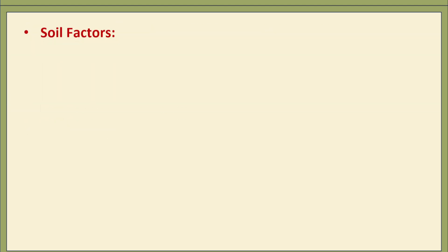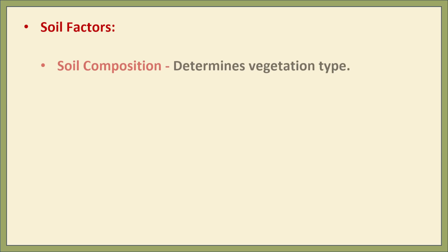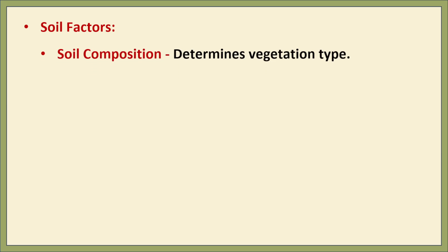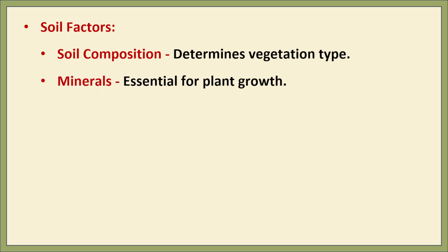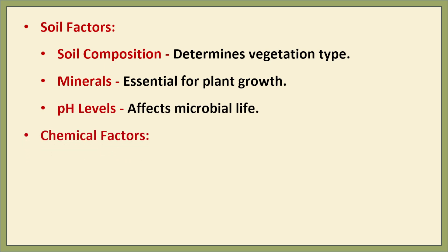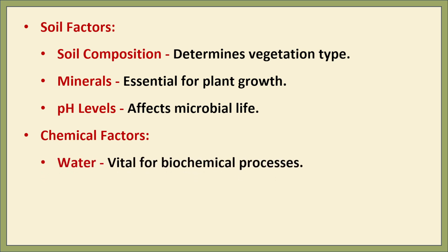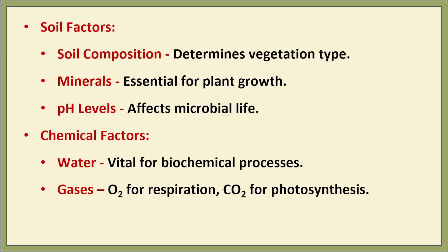The second abiotic factor is soil. Soil composition determines the type of vegetation and microbial activities. Minerals such as nitrogen and phosphorus are essential for plant growth. pH level influences plant and microbial life. The third factor is chemical: water is vital for all biochemical processes; oxygen is required for respiration; carbon dioxide is needed for photosynthesis; and nutrients like nitrogen and phosphorus are recycled through the ecosystem.